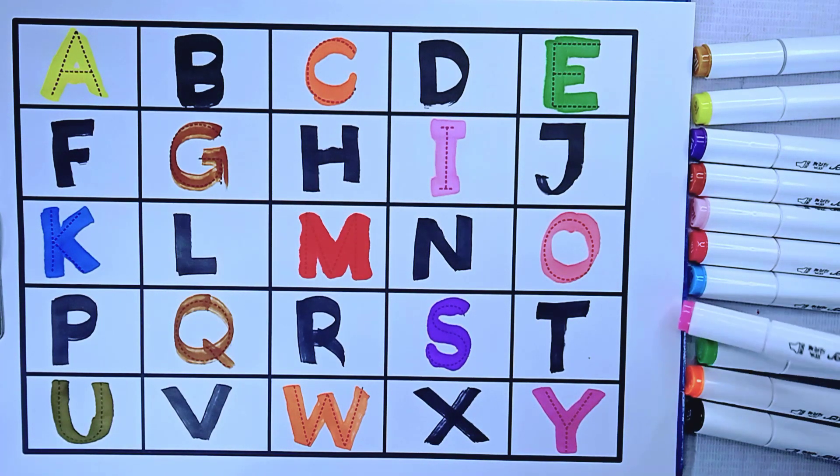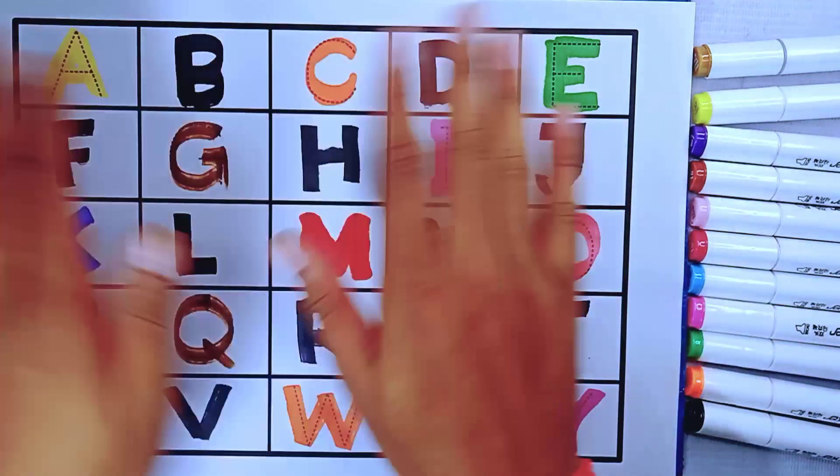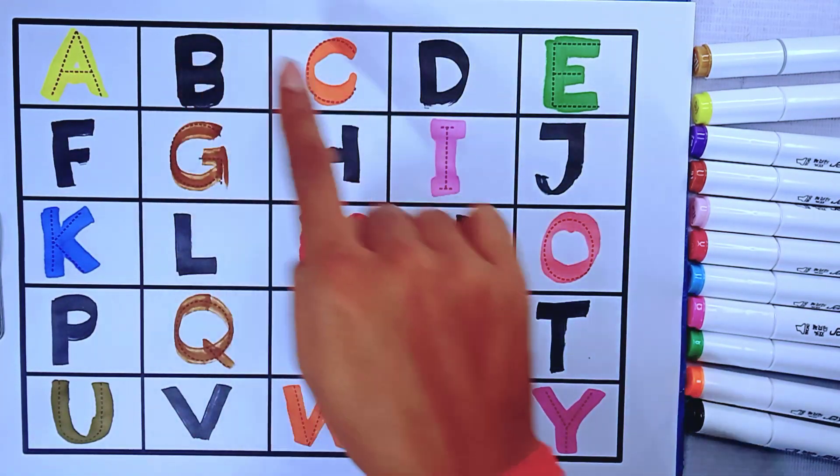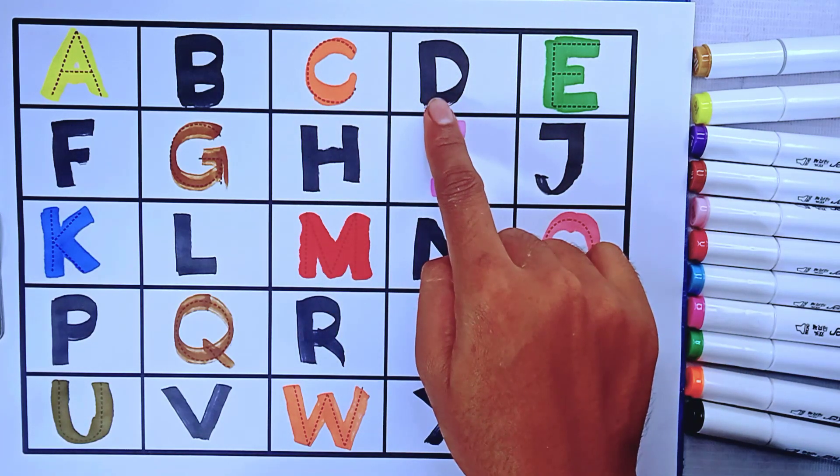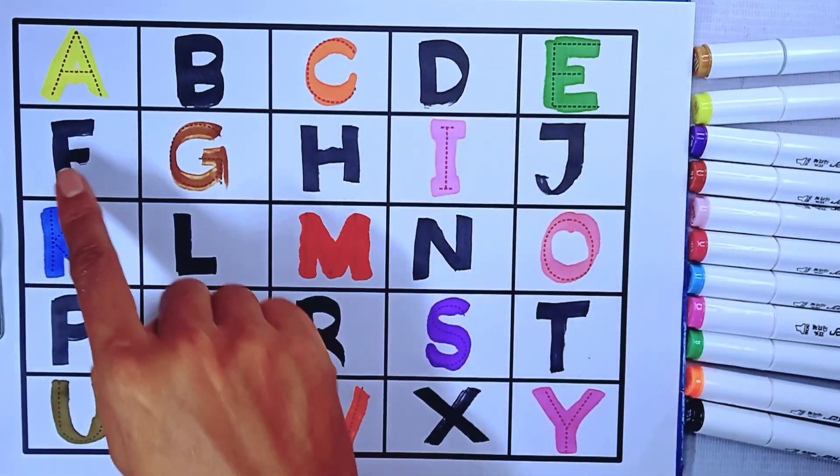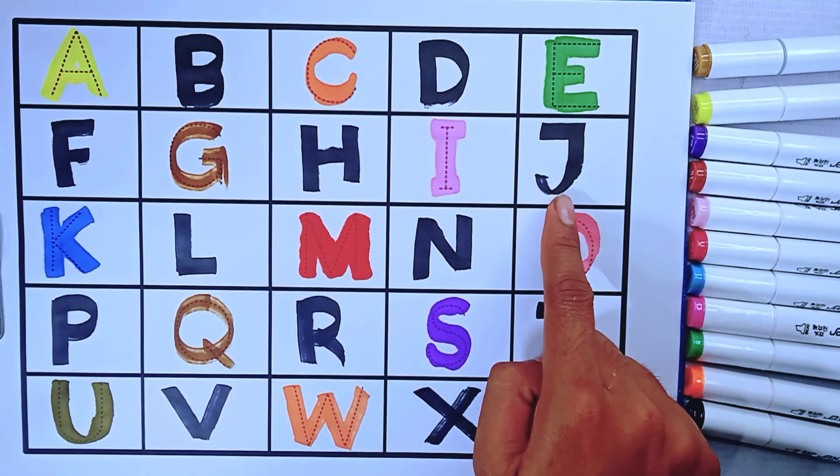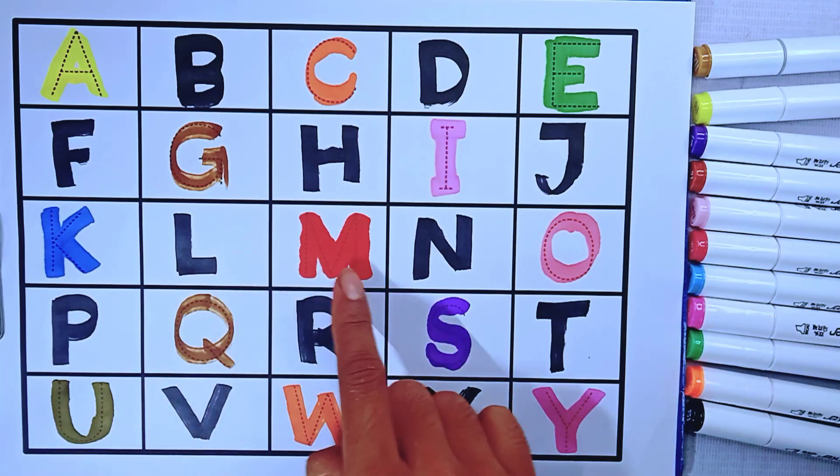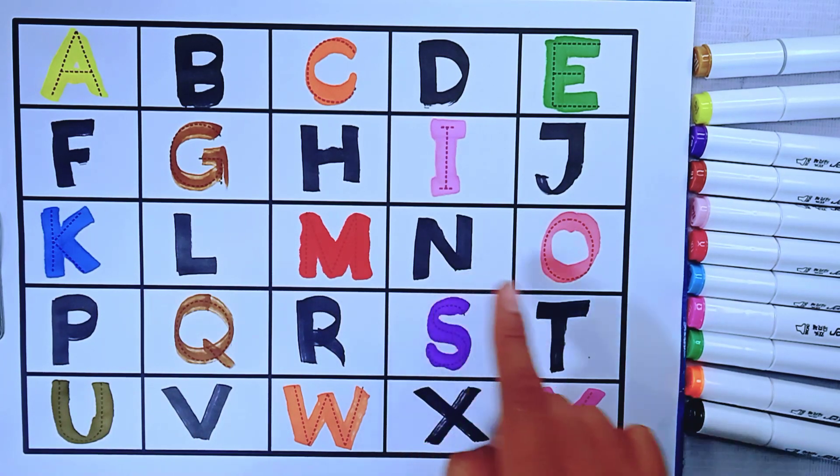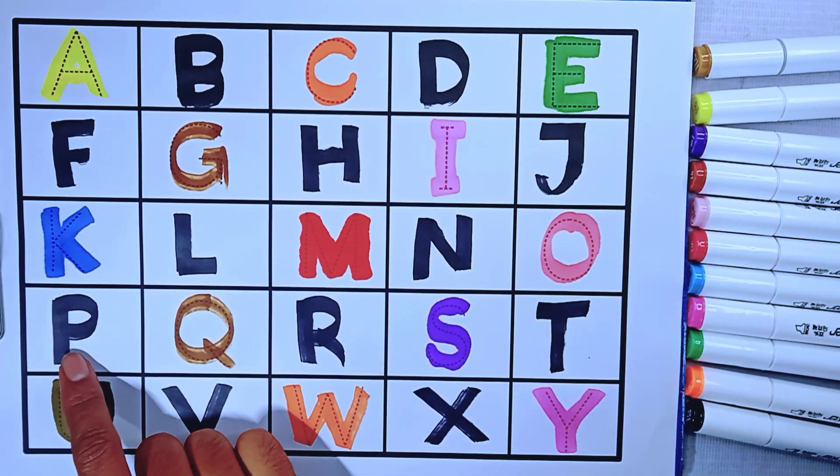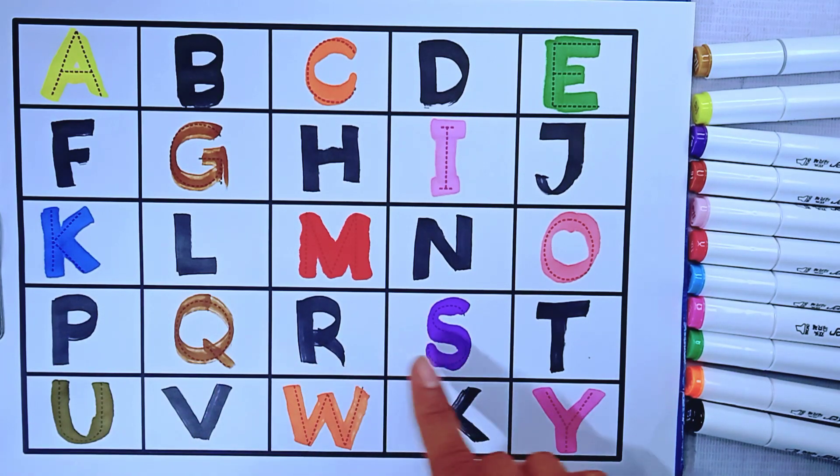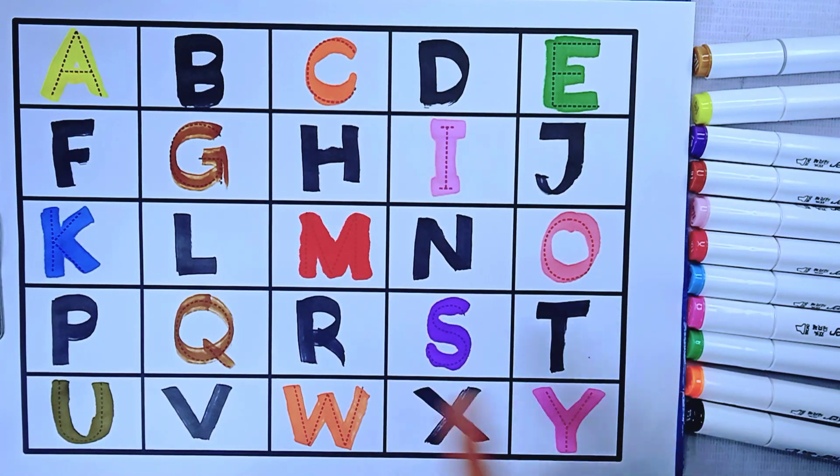So let's go! A, B, C, D, E, F, G, H, I, J, K, L, M, N, O, P, Q, R, S, T, U, V, W, X, Y, Z. Bye kids!